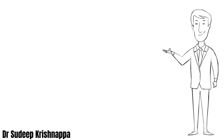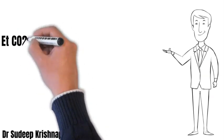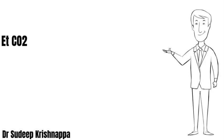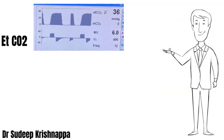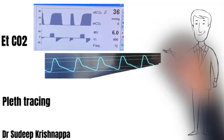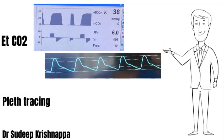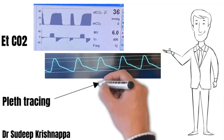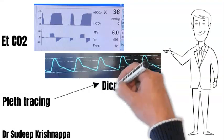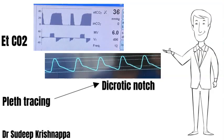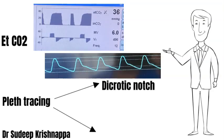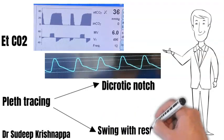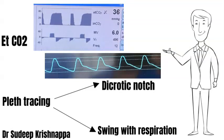There is no need for any special monitoring — standard ASA monitoring is more than enough. Most of the information we need is extracted from the end-tidal CO2, which gives us information about cardiac output, and the plethysmographic tracing from the pulse oximeter. In the plethysmographic tracing, the first thing we look at is the position of the dicrotic notch, which gives an idea about vascular resistance. The second is the variation in amplitude of the plethysmographic trace with respiration, which gives an idea about volume status.